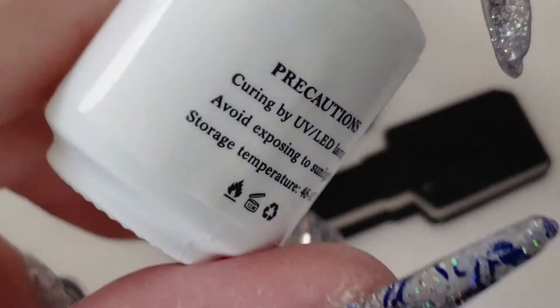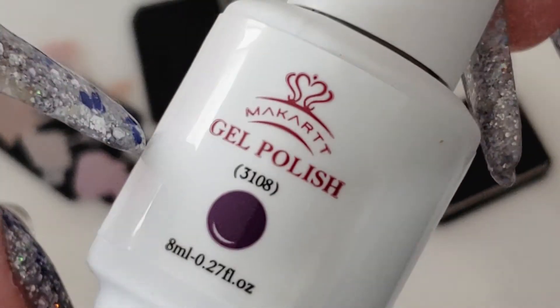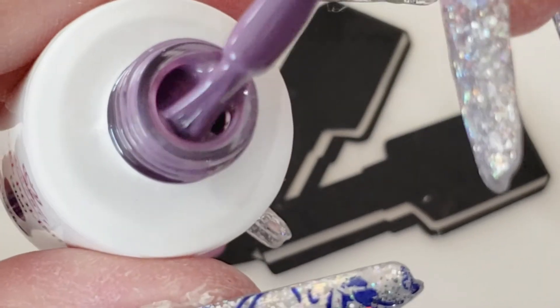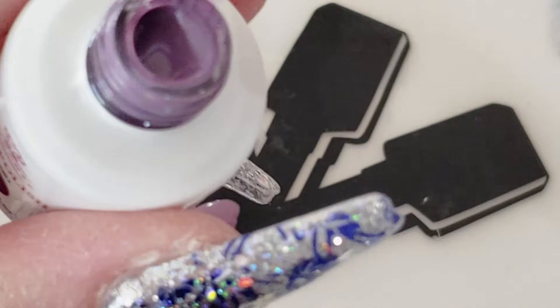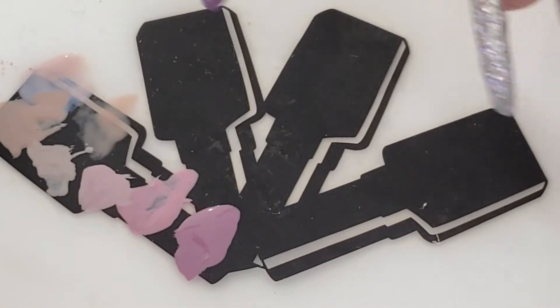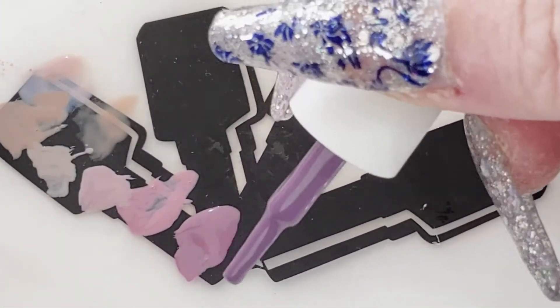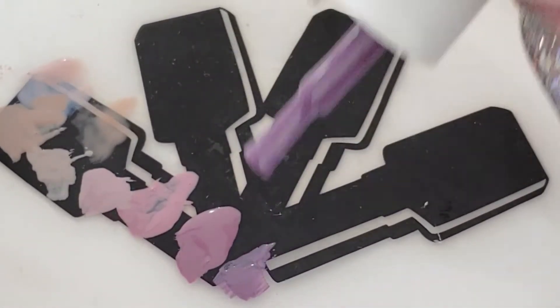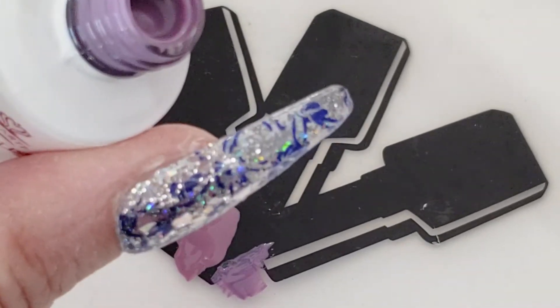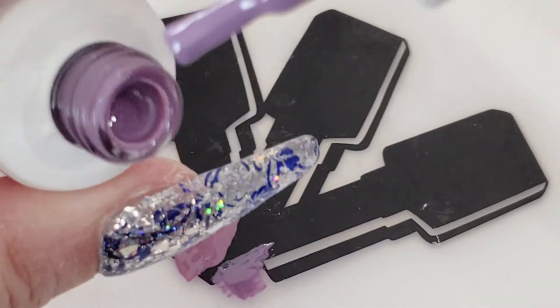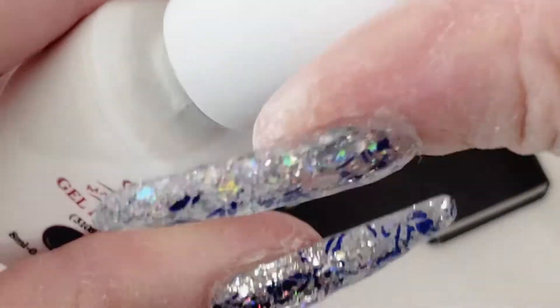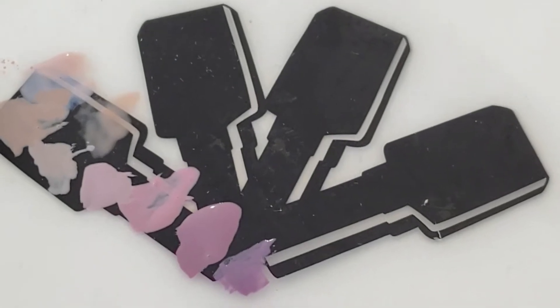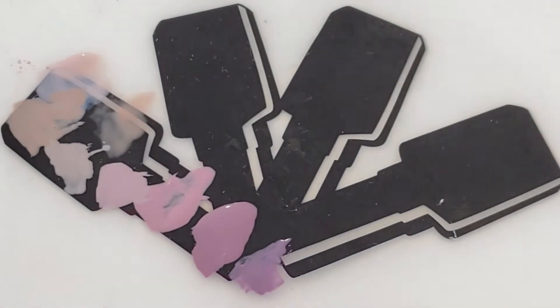Alright, and our last one for the first row, 3108. Let's take a look. And this one looks like a dark nude. I'll put that right here. So there is our first row, just a whole bunch of nudie neutrals.